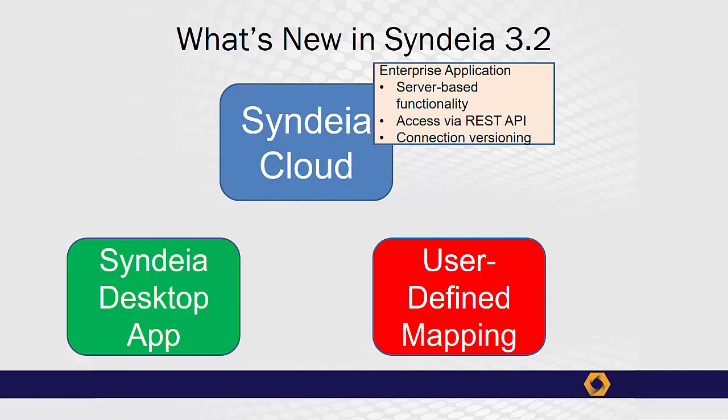Accessible to everyone on the development team through an open REST API, Cyndia Cloud enables users to write their own applications that can query all the intermodel connections. The database now maintains versioning of these connections, and future Cyndia releases will be able to reconstruct the total system model graph at any point in the development.